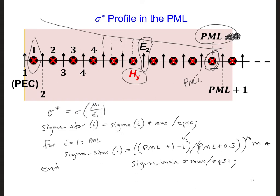So we're getting the appropriate value or distance into the PML when we have a 1 here instead of a 1.5 as we had for the sigma array.